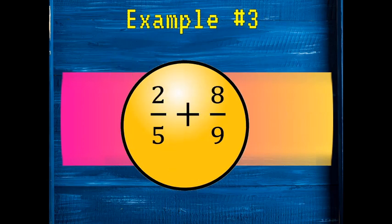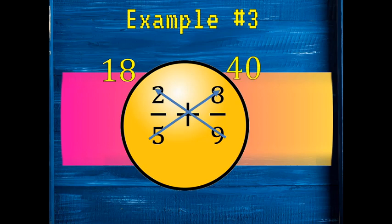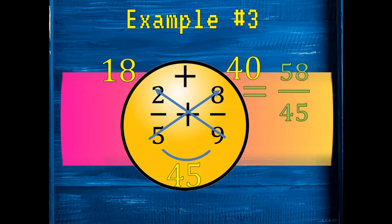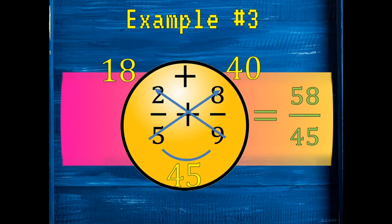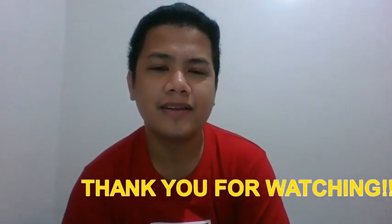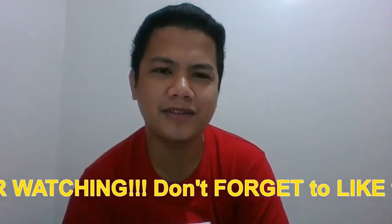Example three: 2/5 plus 8/9. Step one — cross multiply: 2 times 9 gives us 18, 5 times 8 gives us 40, and 5 times 9 gives us 45. Step two — perform the operation. Since it's addition, we add 18 and 40, giving us 58 over 45. This is an improper fraction, so converting it gives us 1 and 13 over 45.